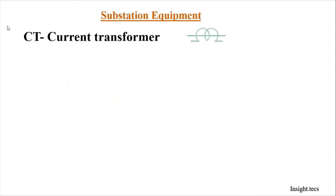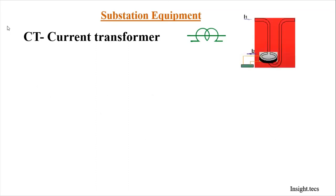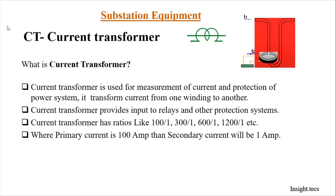The next component is the current transformer (CT). A current transformer is used for measurement of current and for protection in the power system. It transforms current from one winding to another, and the output is given to relays and other protective systems. Current transformers come in ratios like 100/1, 300/1, 600/1 — meaning if the primary current is 100 A, the secondary output is 1 A, used in meters and relays for metering and protection.